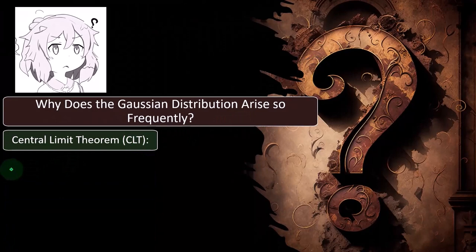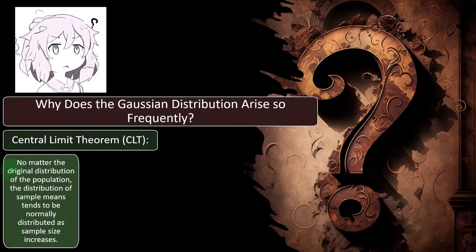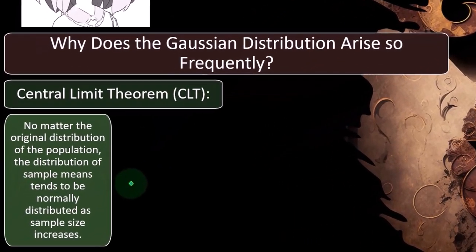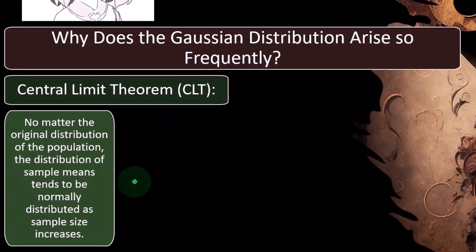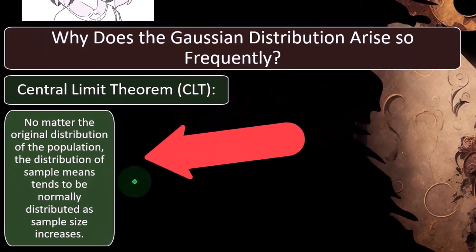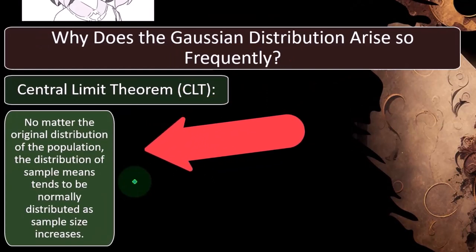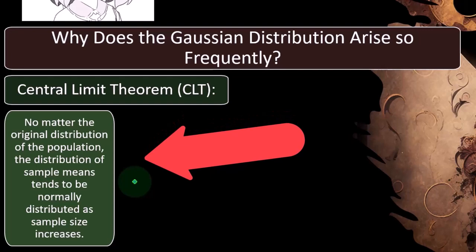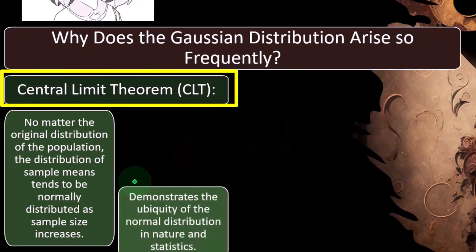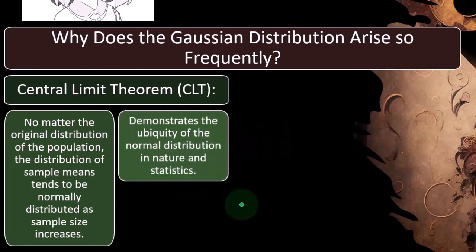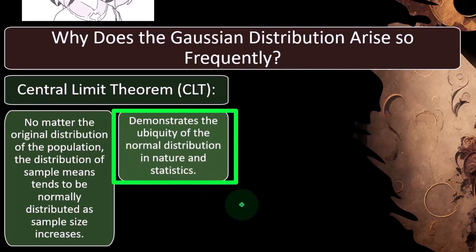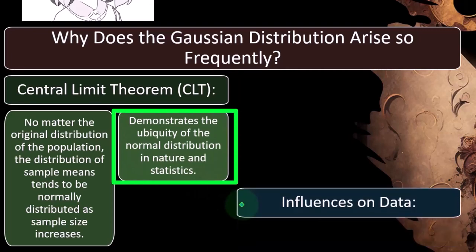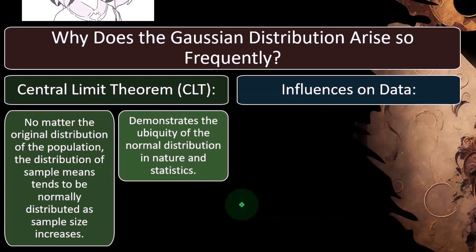So we have the central limit theorem, which we'll talk more about in future presentations. Right now, we want to get an idea just of the characteristics of the bell curve. But this is one reason why a lot of things kind of conform to a bell curve type of distribution. So no matter the original distribution of the population, the distribution of the sample means tends to be normally distributed as sample size increases. So demonstrates the ubiquity of the normal distribution in nature and statistics. We'll talk more about that in future presentations.